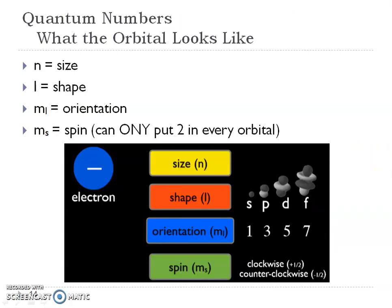Then he talked about the four quantum numbers. Chemists like to quantify everything, and there are four different parts of the address. These quantum numbers give us the address of that electron, and there are four parts of that address.